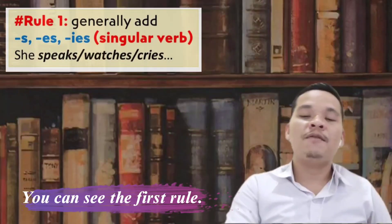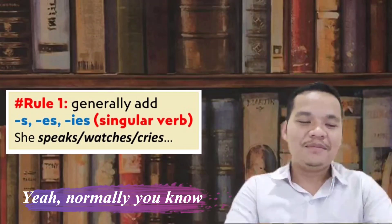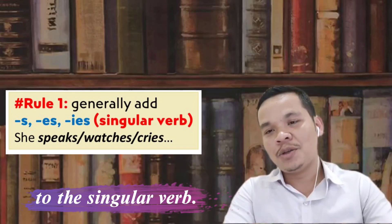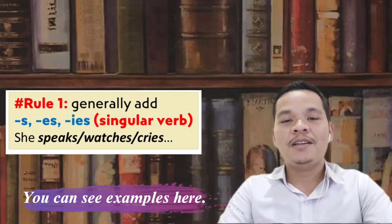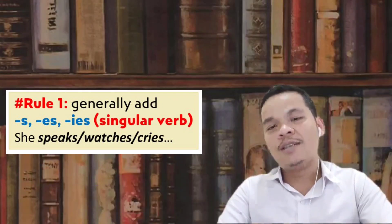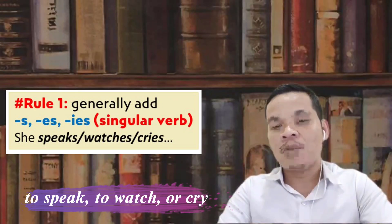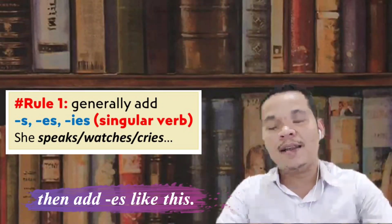Here's the first rule. Normally we add S, ES, or IES to verbs. You can see the example here: she speaks, she watches, she cries. So the base form is just speak, watch, or cry. Here we change Y to I then add ES, like this.